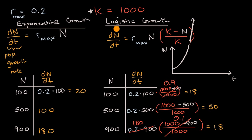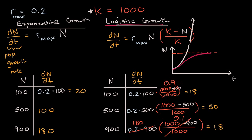With logistic growth, in the beginning it looks a lot like exponential growth, just a little bit slower. But as the population gets higher and higher, growth slows considerably and is limited by the natural carrying capacity K of the environment. On the graph, it would asymptote up toward K but not quite reach it. At the limit, when the population reaches 1,000, the factor (K minus N) over K becomes zero, so the population just wouldn't grow anymore.